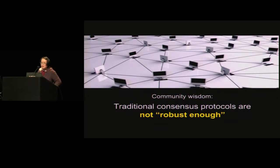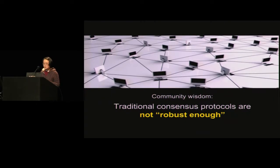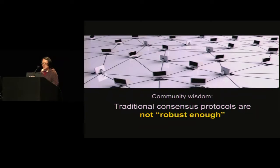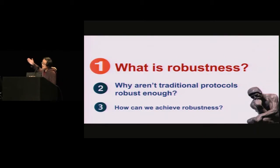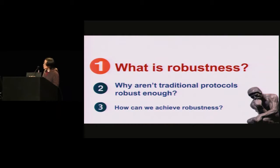I talk quite frequently with people in the cryptocurrency community, and it seems like everyone believes that classical consensus protocols aren't a great fit for this internet-scale deployment, because they are not, quote-unquote, robust enough. This intuition may seem very nice, but it's also somewhat unsatisfying because it doesn't tell us exactly what robustness means. What new robustness properties are we looking for for internet-scale deployment? Only when we can answer this question can we address why traditional protocols aren't robust enough, and how we can actually achieve robustness.